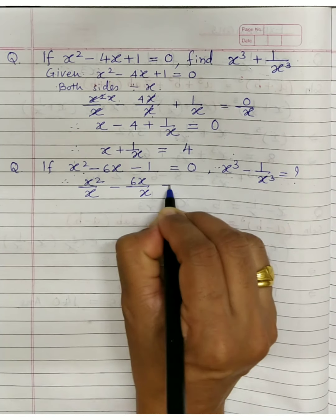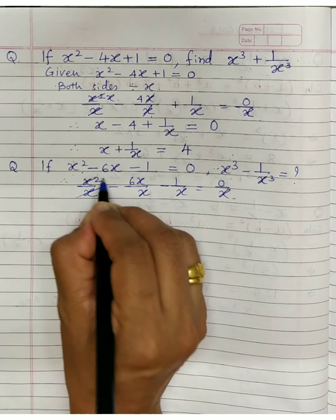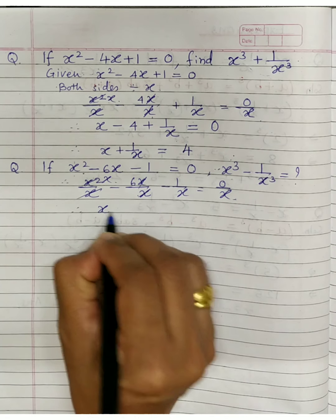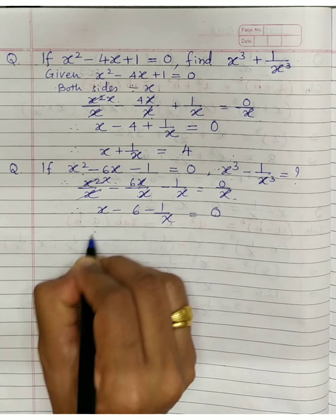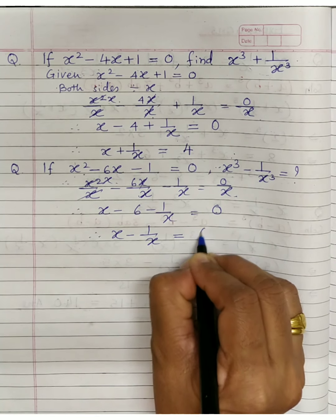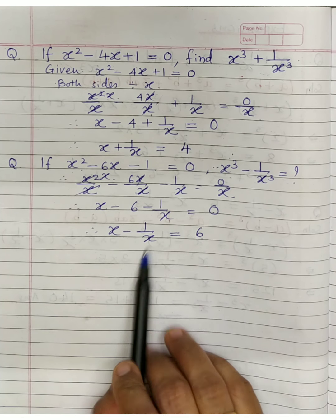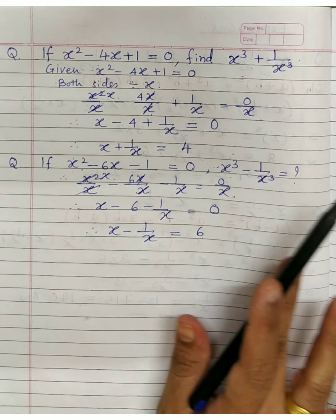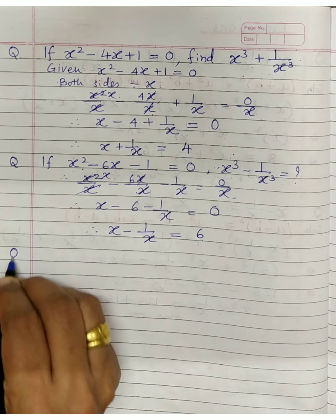Dividing by x: x square upon x minus 6x upon x minus 1 upon x equals 0. This simplifies to x minus 6 minus 1 upon x equals 0. So x minus 1 upon x equals 6. Now use a minus b whole cube formula to find x cube minus 1 upon x cube. This is also your homework.